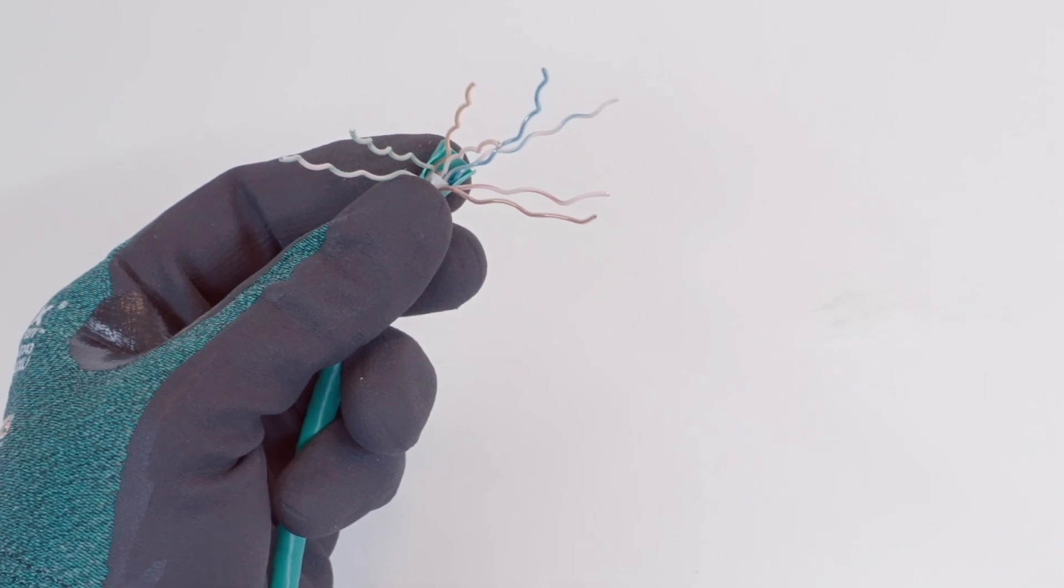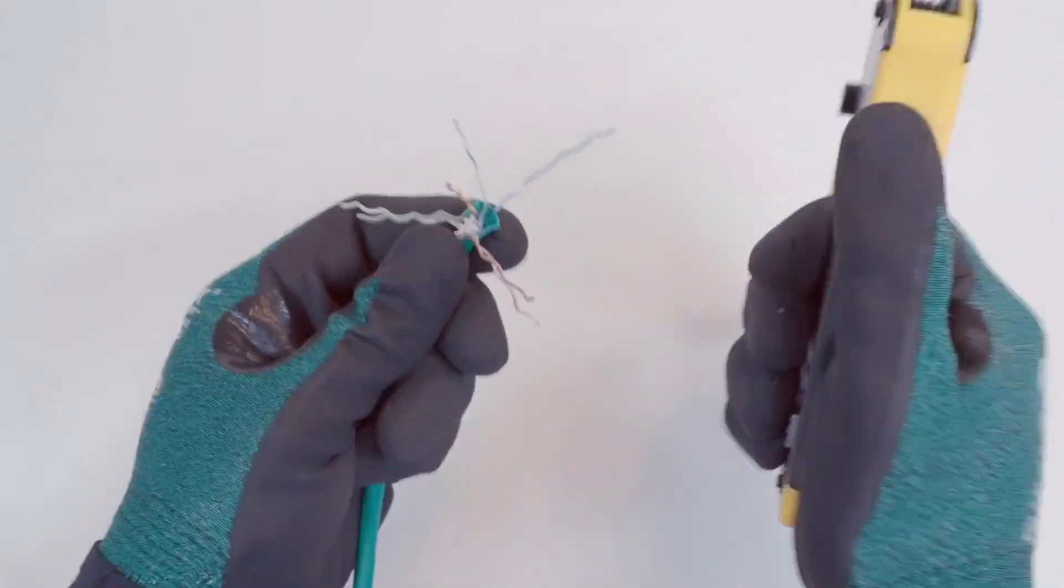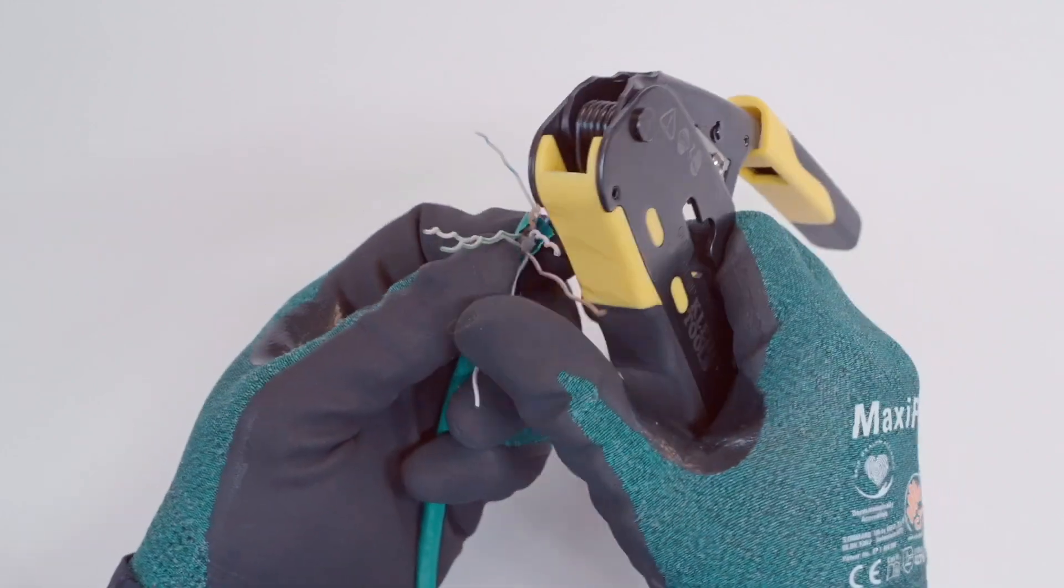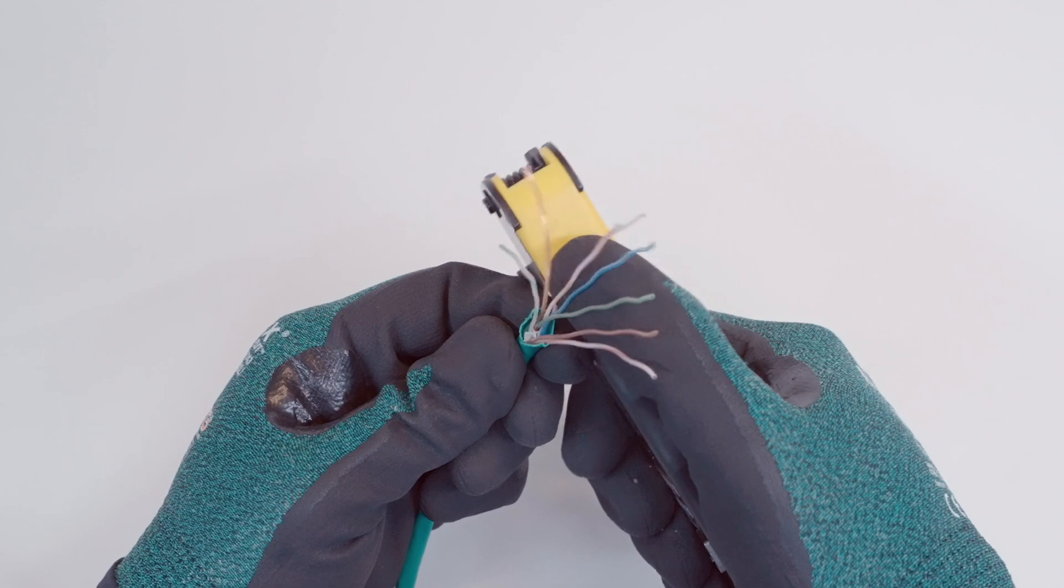To straighten the wires, pinch them between a thumb and an object such as a screwdriver. The crimper itself can be used for this purpose. Pull each wire through the pinch as many times as needed to straighten them out.